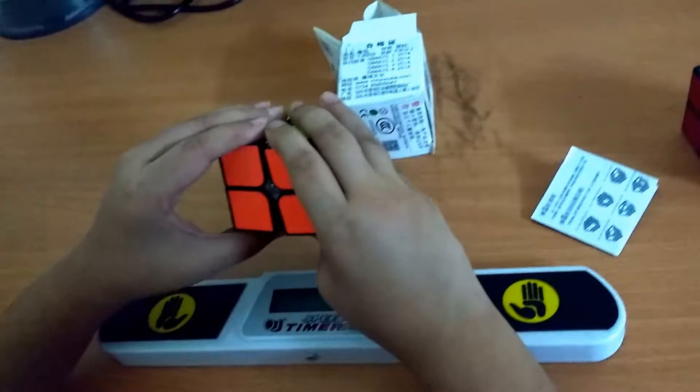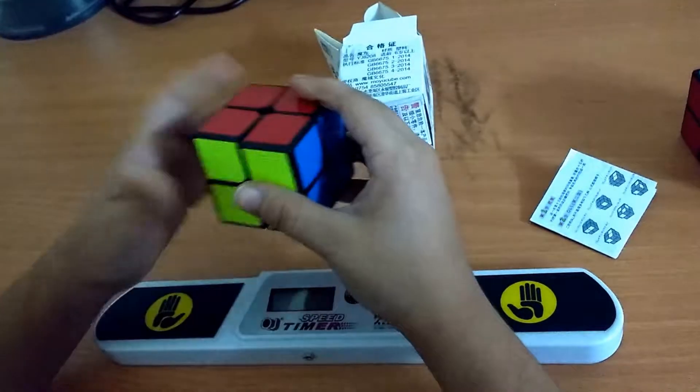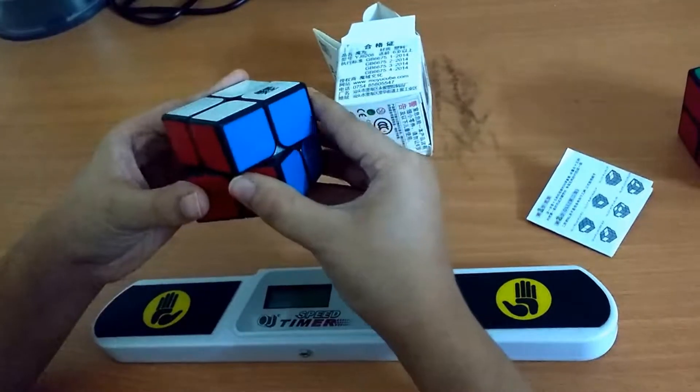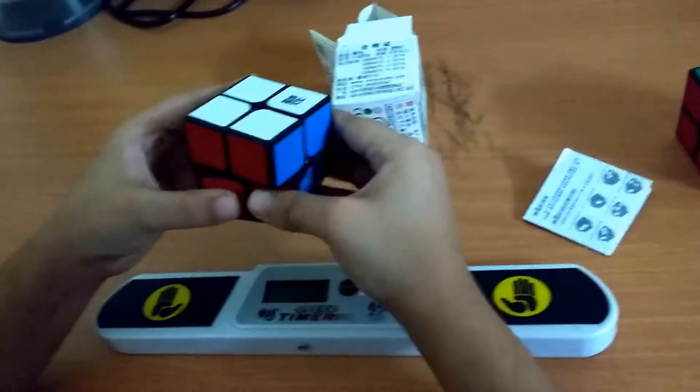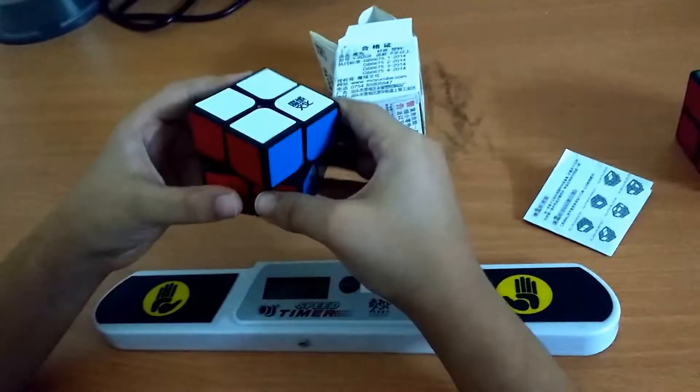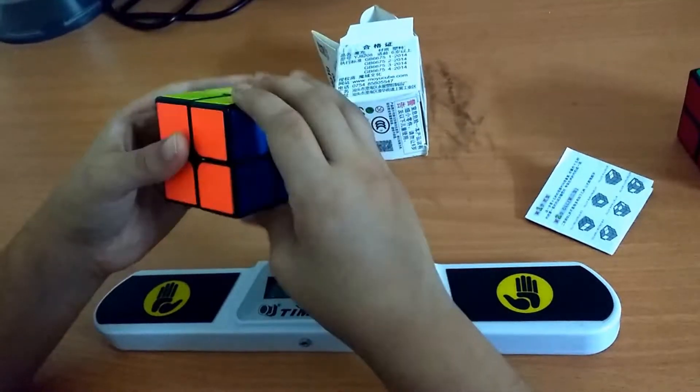The next category is corner cutting and design flaws. As far as I can see, I can see no obvious design flaws in this cube apart from one thing.